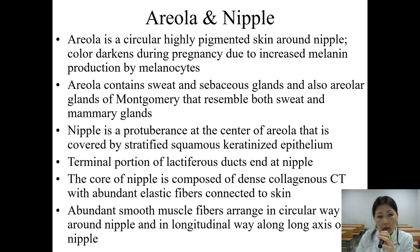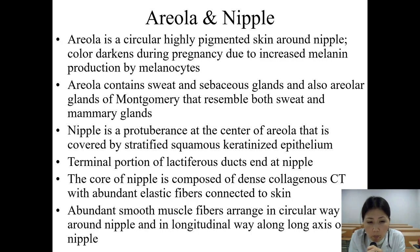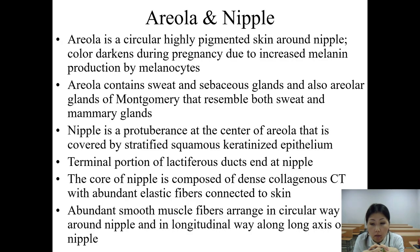Regarding the areola and nipple: the areola is a circular, highly pigmented area of skin around the nipple. Its color darkens during pregnancy due to increased melanin production by melanocytes. The areola contains sweat and sebaceous glands, and also the glands of Montgomery, which resemble both sweat and mammary glands. The nipple is a protuberance at the center of the areola, covered by stratified squamous keratinized epithelium. The terminal portions of the lactiferous ducts open at the nipple. The core of the nipple is composed of dense collagenous connective tissue with abundant elastic fibers connected to the skin, and abundant smooth muscle fibers arranged circularly around the nipple and longitudinally along the axis of the nipple.